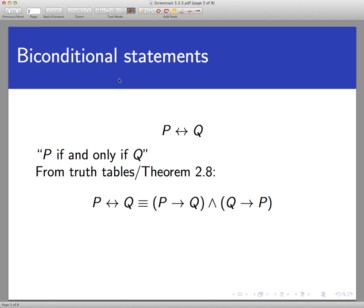One of the things we learned back in the section on logical equivalencies is that P if and only if Q is equivalent to a conjunction. P if and only if Q is equivalent to if P then Q and if Q then P. That is, if you make a truth table for P if and only if Q and you make a truth table for this large compound statement on the right, you will get the same truth values in all cases.